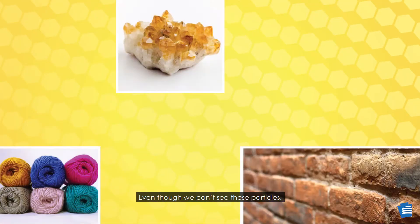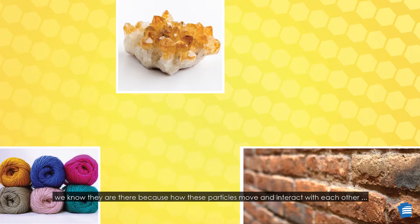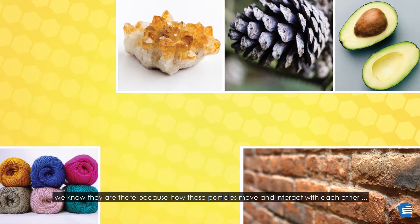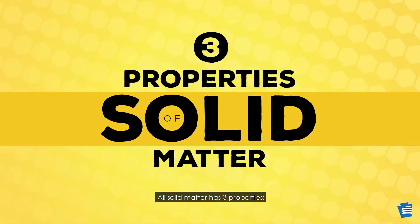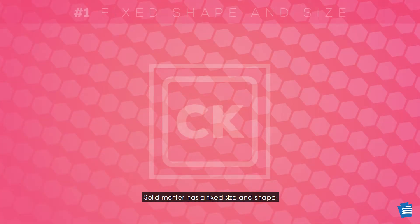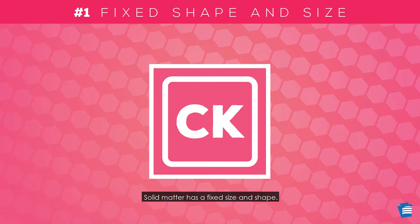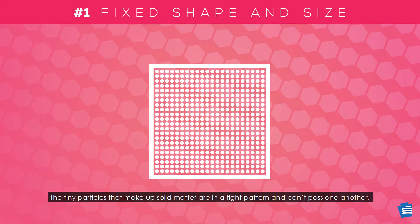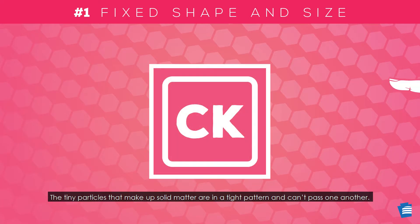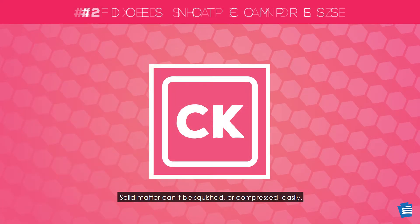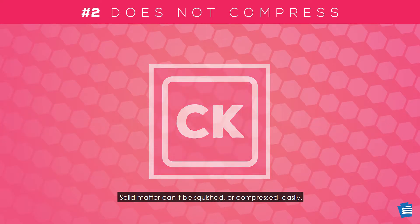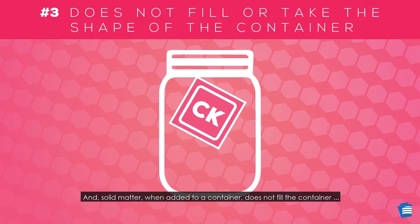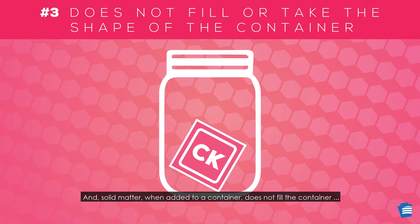Even though we can't see these particles, we know they are there because how these particles move and interact with each other explains what makes matter a solid. All solid matter has three properties. Solid matter has a fixed size and shape. The tiny particles that make up solid matter are in a tight pattern and can't pass one another. Solid matter can't be squished or compressed easily. And solid matter, when added to a container, doesn't fill the container and doesn't take the shape of the container.